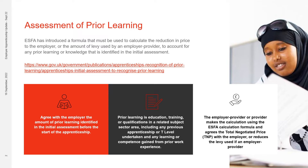The Institute for Apprenticeships and Technical Education provides progression route information on its website showing the T-levels that have content that replicates the content in some apprenticeship standard occupations. These progression routes indicate where prior learning must be taken into account. In some cases the T-level content is too similar to the apprenticeship standard and would reduce the minimum duration to a point where the apprentice is no longer eligible for that apprenticeship.